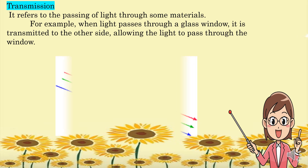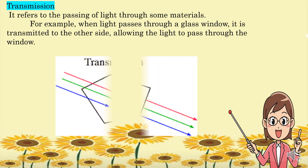Transmission refers to the passing of light through some materials. For example, when light passes through a glass window, it is transmitted to the other side, allowing the light to pass through the window.